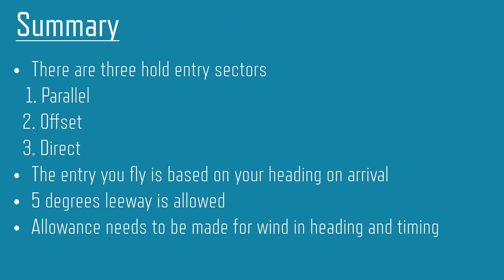In summary, the hold entry sectors exist to establish the inbound track before turning outbound in the hold in the most efficient way. Three are defined: 1. Parallel, 2. Offset, 3. Direct. The entry you fly is based solely on your heading arriving at the fix. Five degrees of leeway is allowed between sectors either side. Allowance needs to be made for wind, heading, and timing — more on this in another video. Thank you for watching; if you enjoyed this or found it helpful, please like and subscribe. Let us know in the comments what video you would like to see next. This has been Good Flying Made Easy.